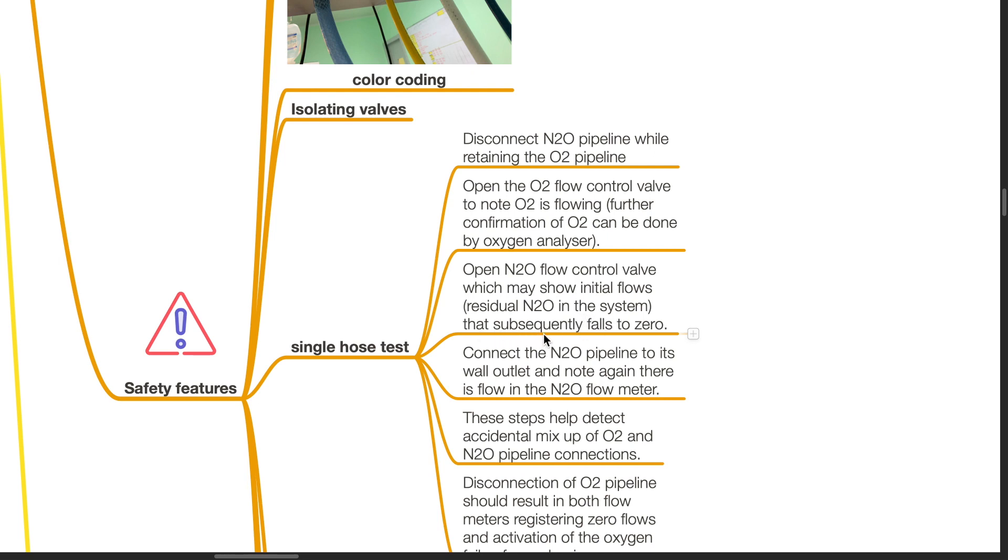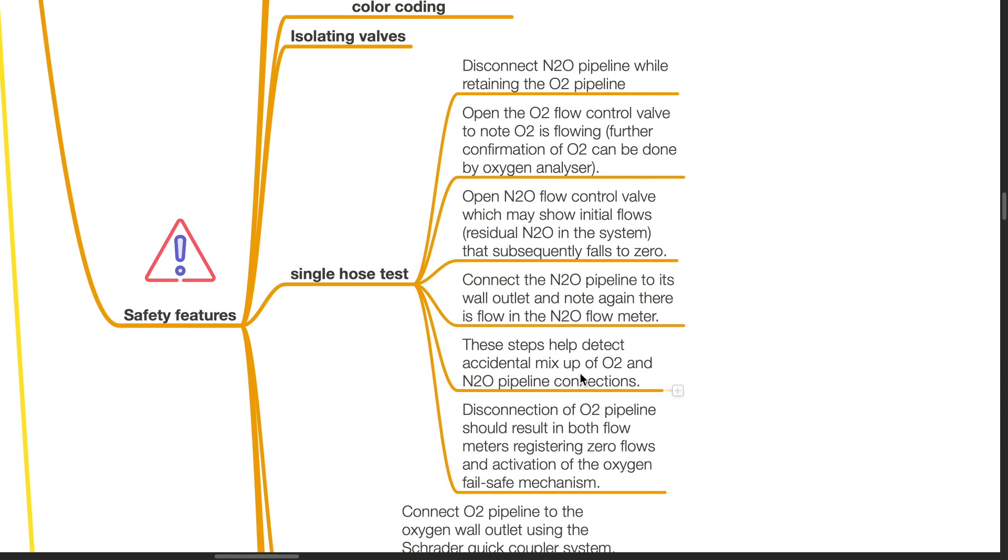That subsequently falls to zero. Connect the nitrous oxide pipeline to its wall outlet and note again there is flow in the nitrous oxide flow meter. These steps help detect accidental mix up of oxygen and nitrous oxide pipeline connections. This connection of oxygen pipeline should result in both flow meters registering zero flows and activation of the oxygen failsafe mechanism.